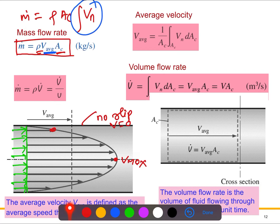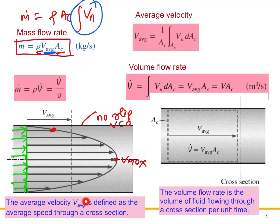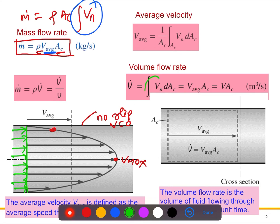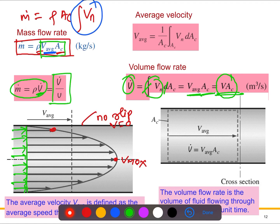So the mass flow rate is: ṁ = ρ · Vavg · Ac. Now for the volume flow rate — it is defined as the volume of fluid flowing through a cross-section per unit time. Integrating Vn over dAc gives us Vavg · Ac, so the volume flow rate V̇ = Vavg · Ac. Substituting this back, the mass flow rate equals ρ · V̇, or equivalently V̇ divided by the specific volume v (since ρ = 1/v).